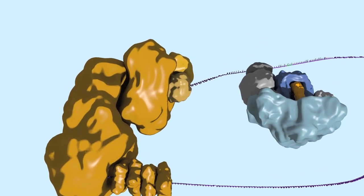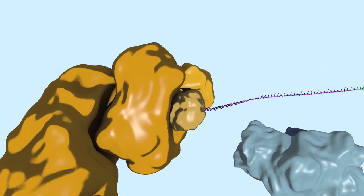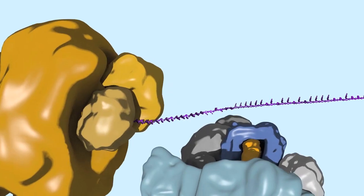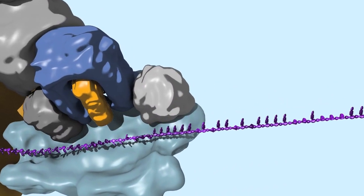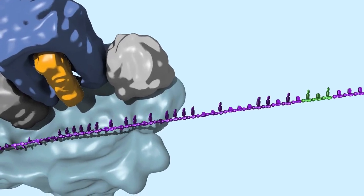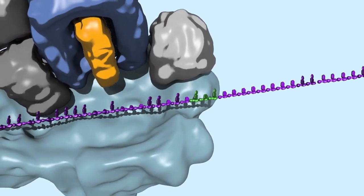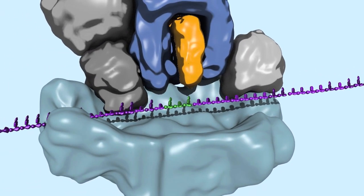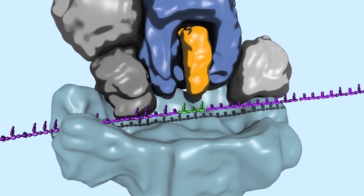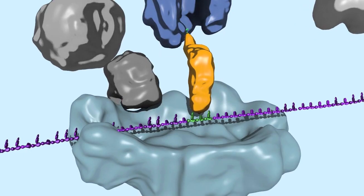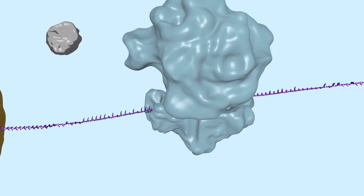In eukaryotes, the ribosome engages the five prime capped end of the mRNA and in association with the collection of initiation factors scans along the mRNA until it encounters the five prime most AUG codon. Because the initiator tRNA is part of this scanning complex, it plays a key role in finding the AUG and positioning the ribosome complex where it belongs.